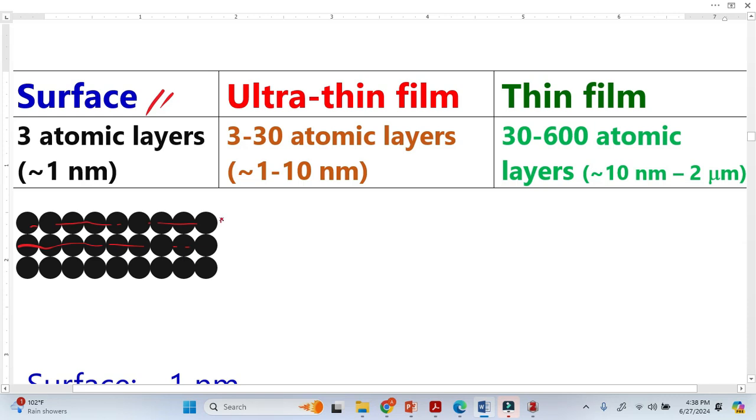If we take the thickness of these three atomic layers, it will be approximately equal to one nanometer. So this is basically the surface, a very thin film. If we take three atomic layers of any element, they become a surface.